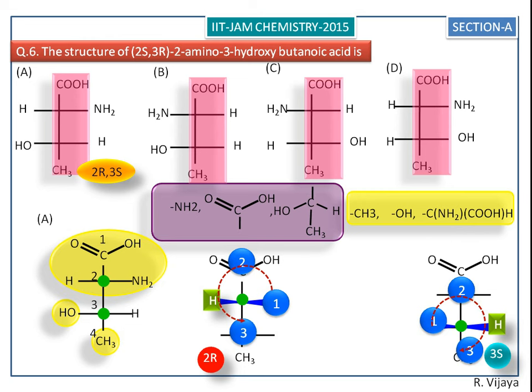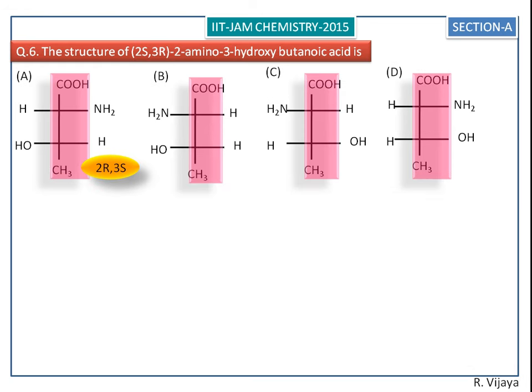So the overall configuration for the A molecule is 2R and 3S. This is not the correct answer for the given question, so we go to the B structure.